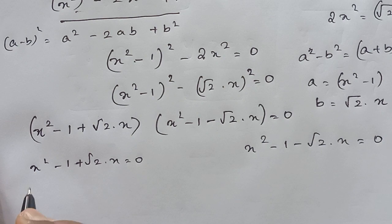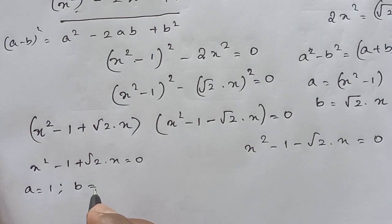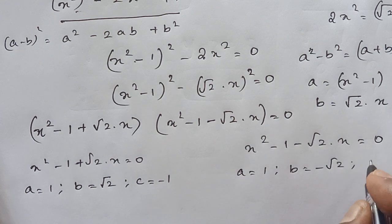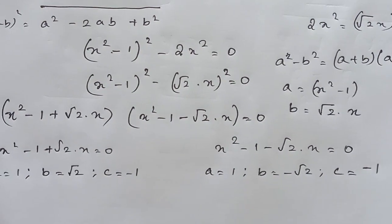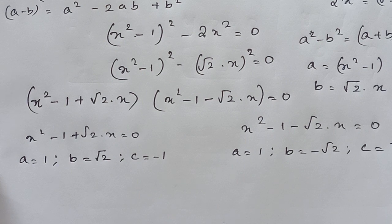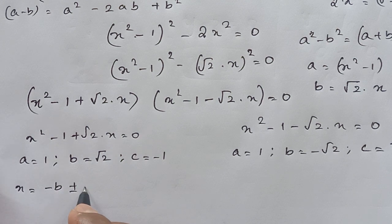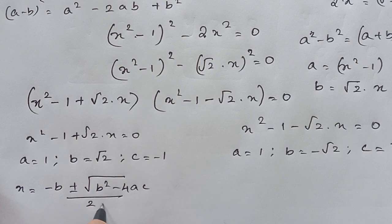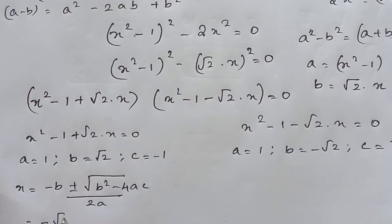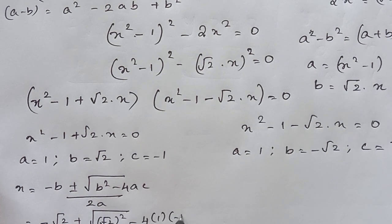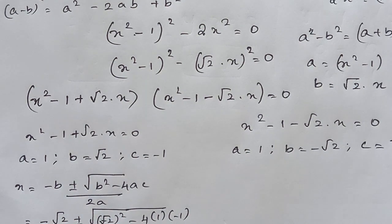For the first equation, a equals 1, b equals √2, c equals minus 1. Applying the quadratic formula: x equals minus b plus or minus square root of b squared minus 4ac divided by 2a. So x equals minus √2 plus or minus square root of 2 squared minus 4 times 1 times minus 1, divided by 2 times 1.